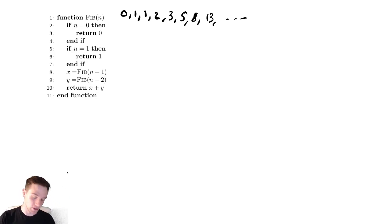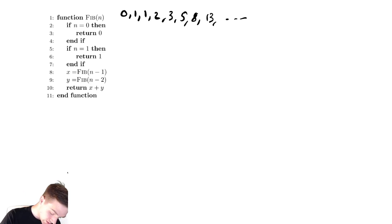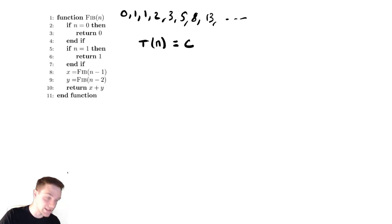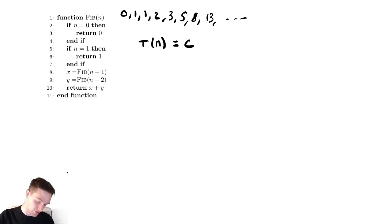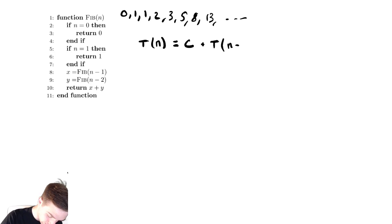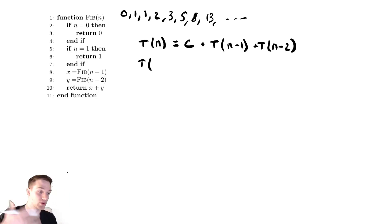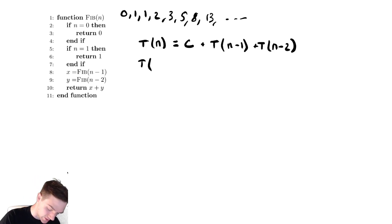Looking at the costs of the various things involved, T of n is equal to constant runtime — everything there is just an if statement or addition other than the recursions — plus two recursive calls, one of size n minus 1 and one of size n minus 2. For the worst case runtime, we take the worst of the options for the if statement, so T of 0 equals C.